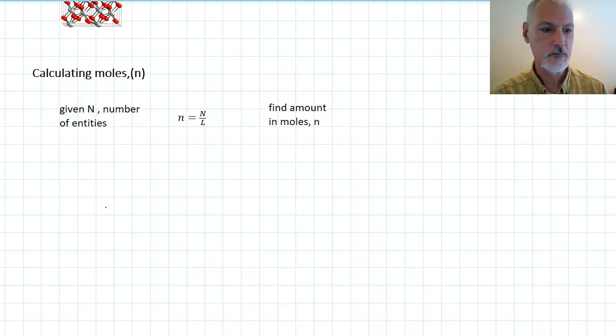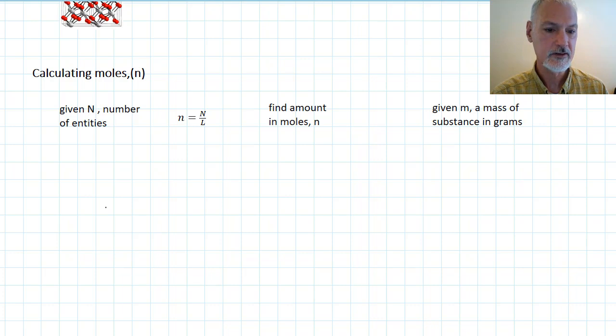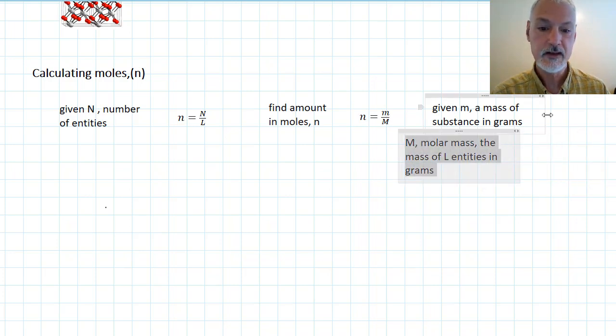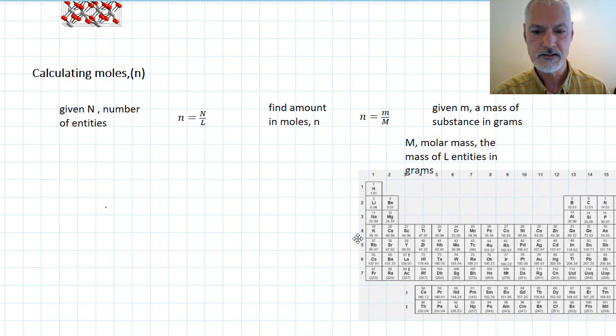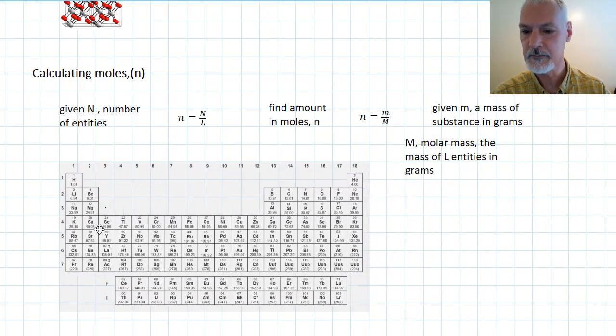There's another technique to find moles if we're given the mass of a substance in grams. To do that, we could calculate the number of moles by dividing that mass by something we call the molar mass. The molar mass being that mass of substance that contains Avogadro's number of particles. Let's look at how you could figure out what that number happens to be.